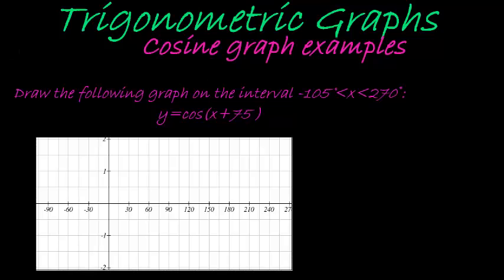So finally we get to an example where we have a cos graph with a horizontal shift. And this is the function given that y is equal to cos of x plus 75 degrees.